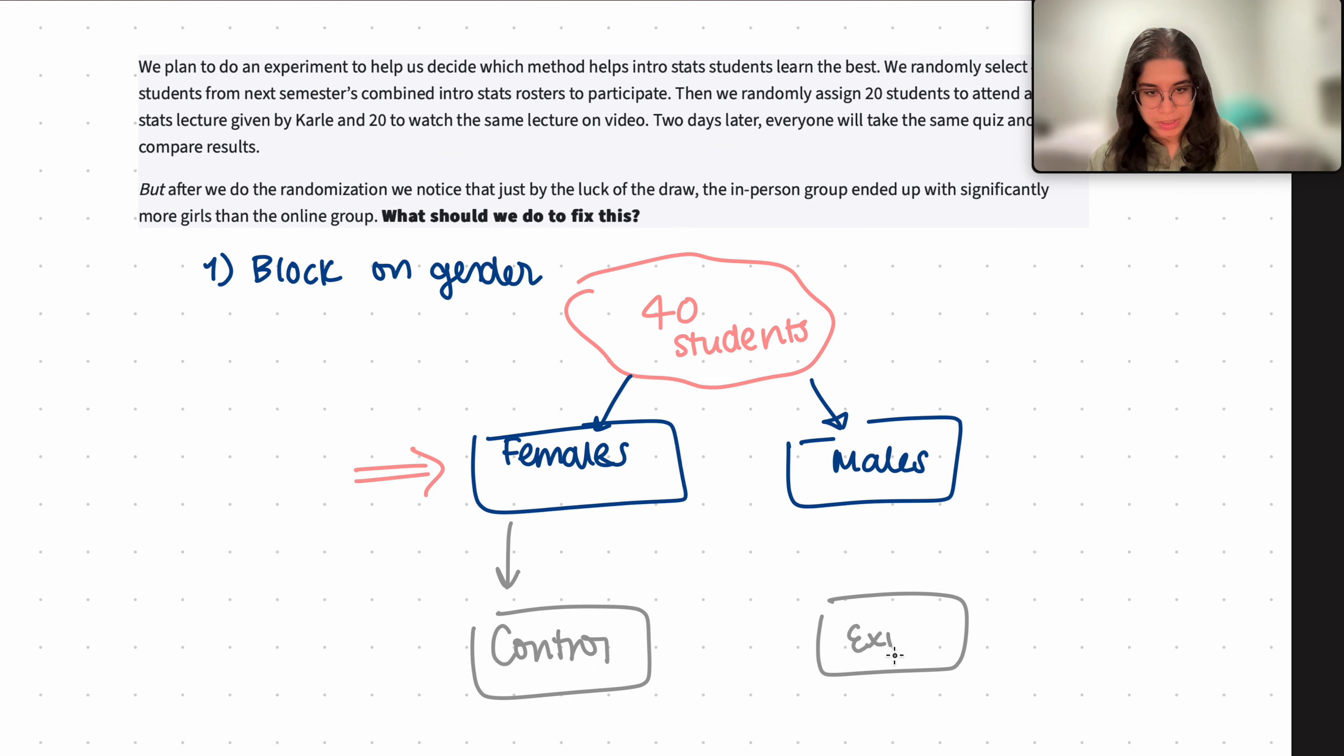I guess here we're dealing with online and in-person, so let me make it a bit more specific: online and then this is in-person. So let's say we assign half of the females to online and half of them to in-person, and randomly assign half the males to online and the other half in-person.